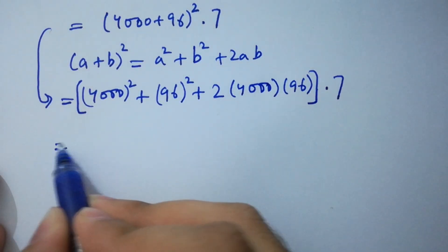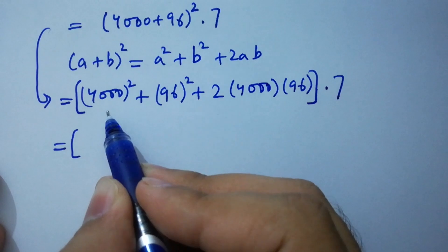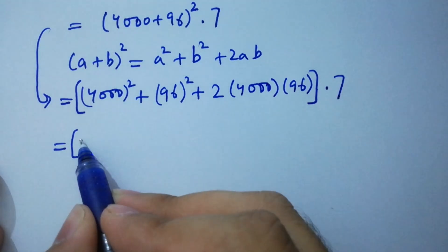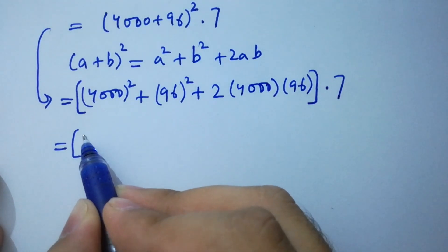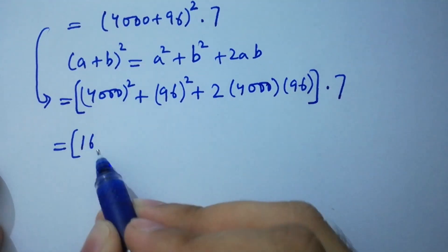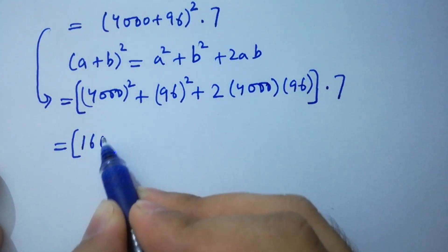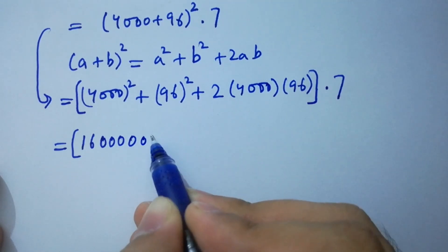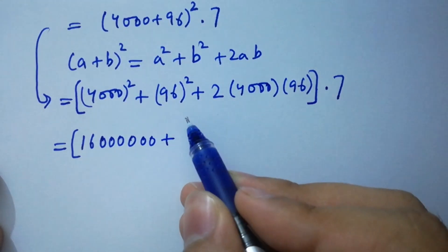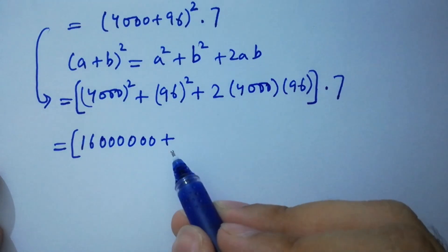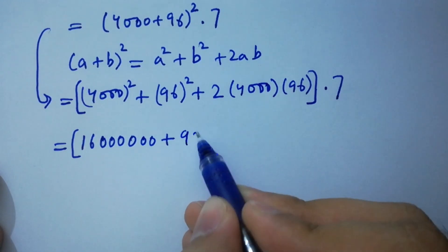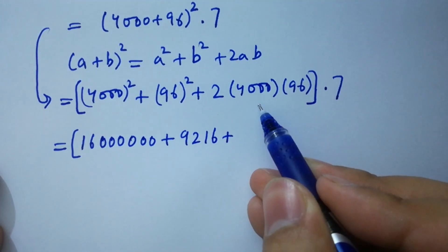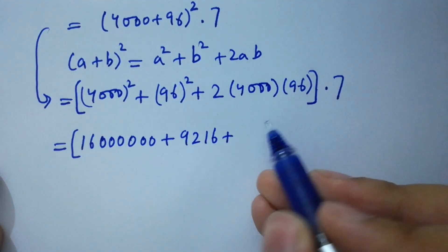We have 4000 squared plus 96 squared plus 2 times 4000 times 96, all times 7. 4000 times 4000: 4 times 4 is 16, with 6 zeros, giving 16,000,000. 96 times 96 is 9216. 2 times 4000 times 96 gives 768,000, times 7 as it is.